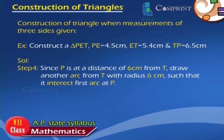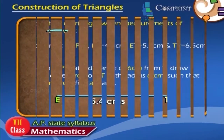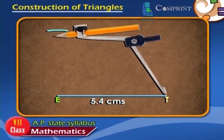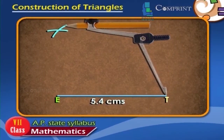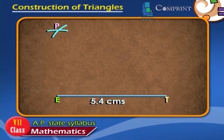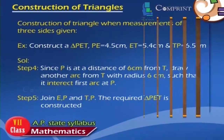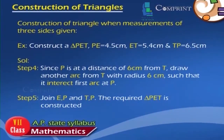The arc intersects at point P. Step 5: Join EP and TP. The required triangle PET is constructed.